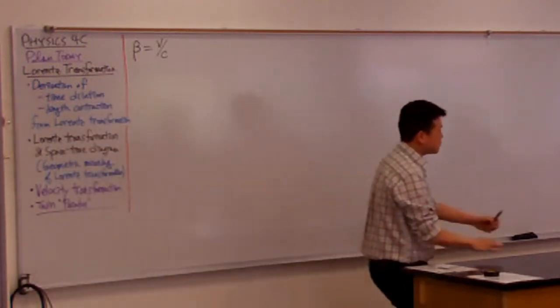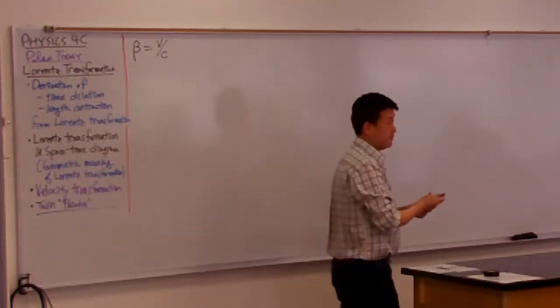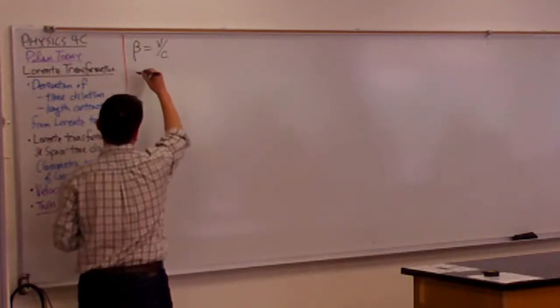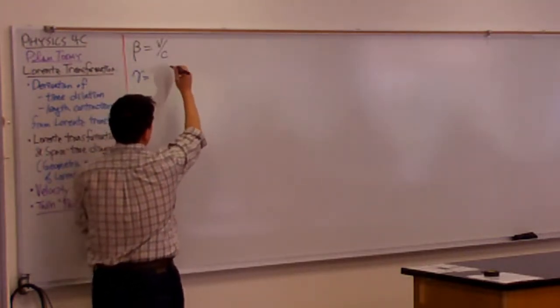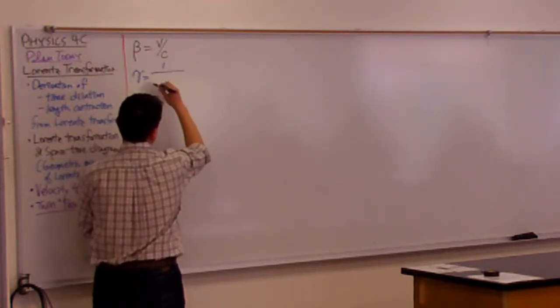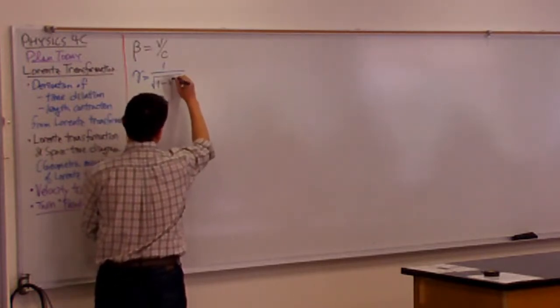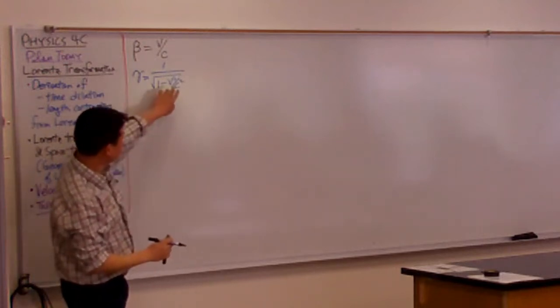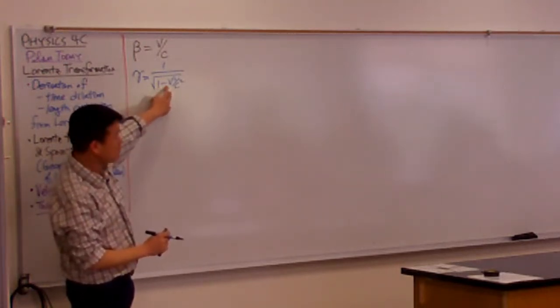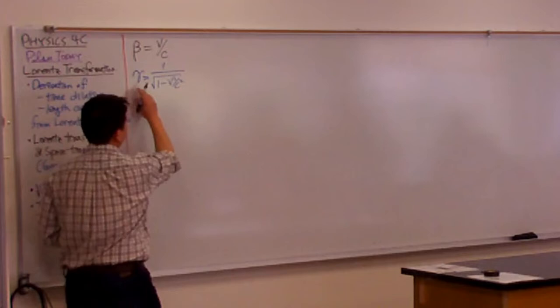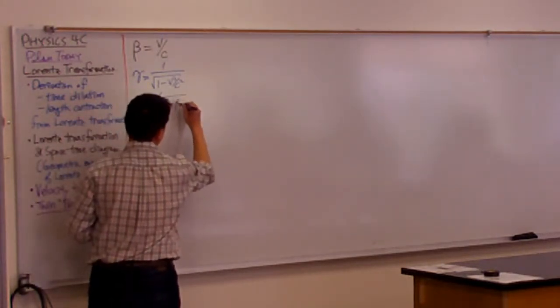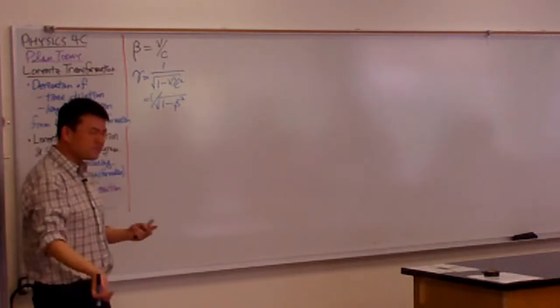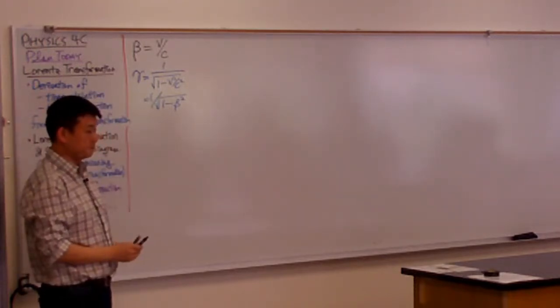For example, you guys saw gamma factor before already. It used to be one over square root of one minus V squared over C squared. And you see this here, V over C. So in terms of beta, gamma is simply one over square root of one minus beta squared. It's marginally simpler.